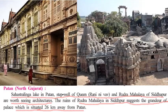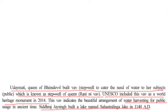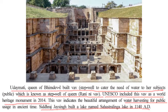In Patan, the Sahastralinga Lake, the step well of Queen — Rani ki Vav — and the Rudra Mahalaya in the whole Siddhapur city are worth-seeing architectures. The ruins of Rudra Mahalaya in Siddhapur suggest the grandeur of that palace, situated 26 km from Patan. Queen Udai Mati, wife of King Bhimdev I, built the Rani ki Vav. UNESCO included this Vav as a World Heritage Monument in the year 2014.